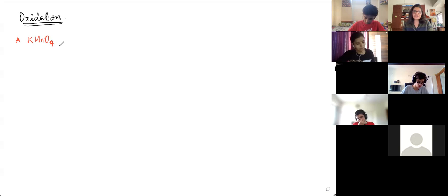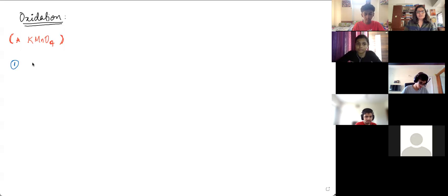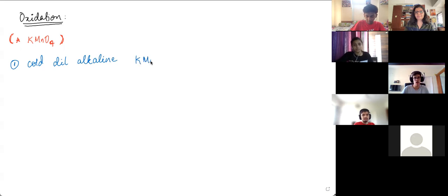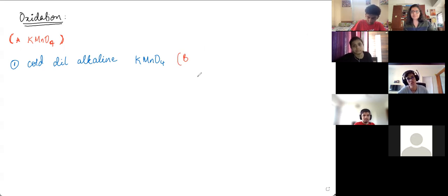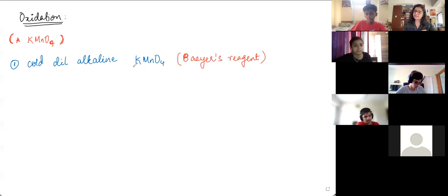So if you want to control the oxidation - keep it to the extent you want - you control KMnO4 by preparing different solutions of it. The first one: if you take cold, dilute, and alkaline conditions - cold, dilute, alkaline KMnO4 - this is also called Baeyer's reagent. Note it down, because if the question says Baeyer's reagent, don't be confused. Baeyer's reagent is nothing but cold, dilute, alkaline KMnO4.